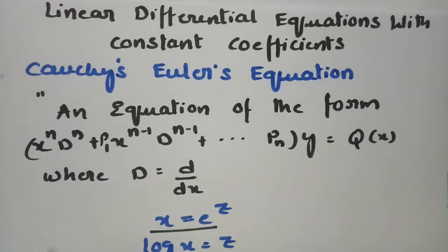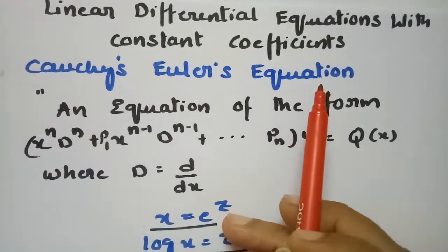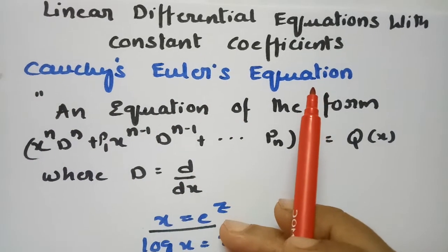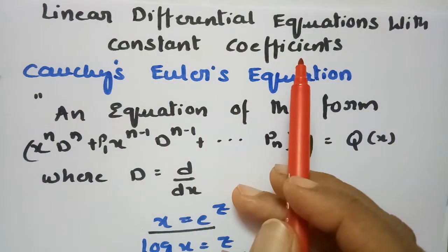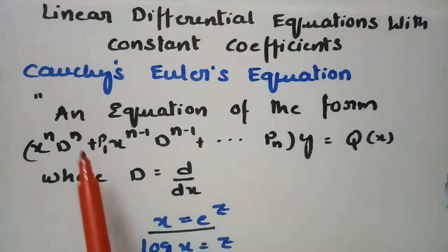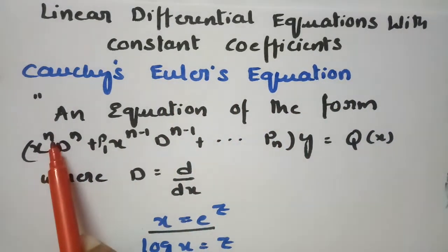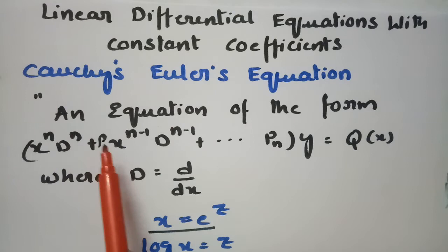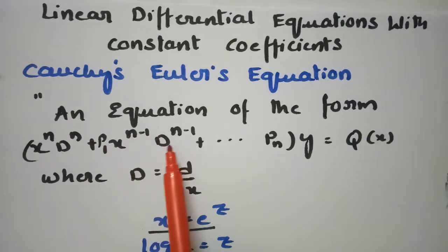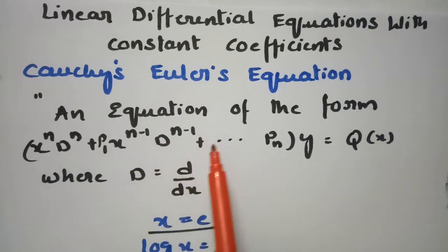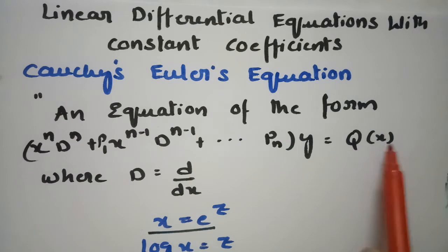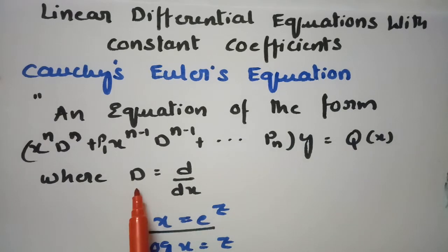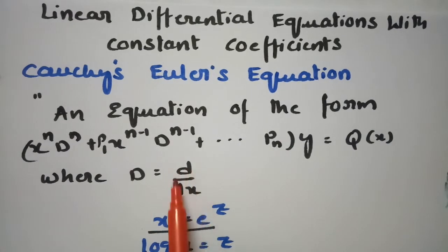In this video, I am going to explain Cauchy's Euler equation. This topic is from linear differential equations with constant coefficients. An equation of the form x^n D^n + p1·x^(n-1)·D^(n-1) + ... + pn of y = Q(x), where D = d/dx, derivative with respect to x.